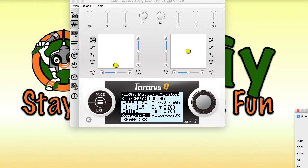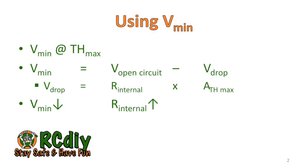Minimum voltage is useful in determining comparative battery internal resistance. V minimum is basically equal to the voltage of the battery minus the voltage drop. And the voltage drop is basically your internal resistance multiplied by the current you're drawing at that moment.